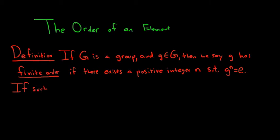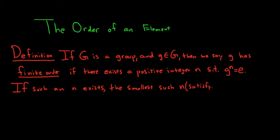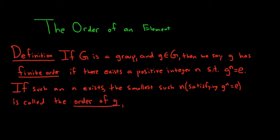If such an n exists, the smallest such n satisfying g to the n equals e is called the order of g. We denote it as little o of g. Some people use different notation, but we'll stick with little o for order.